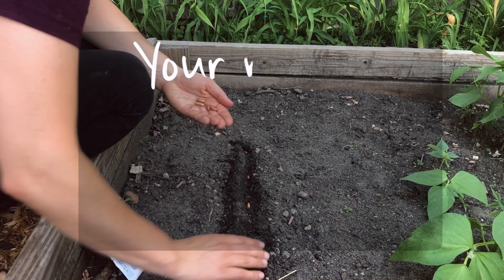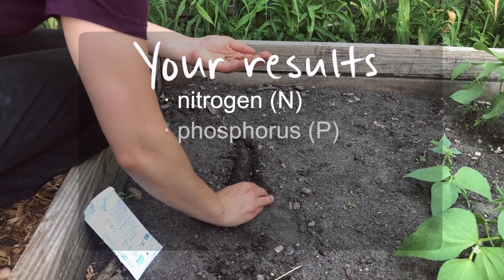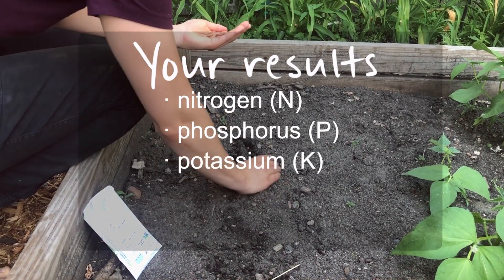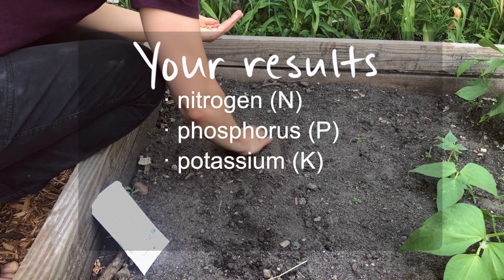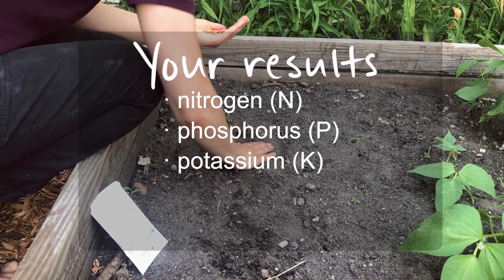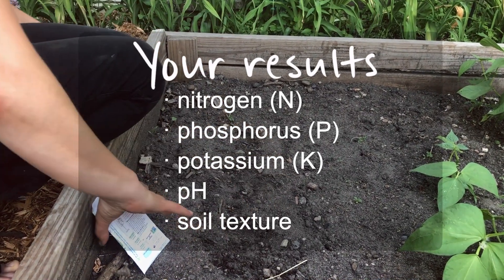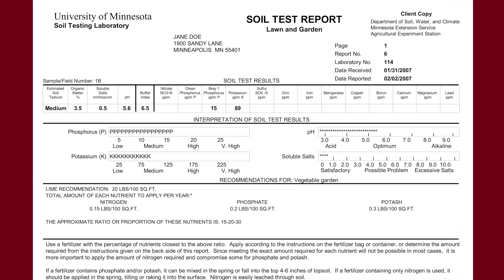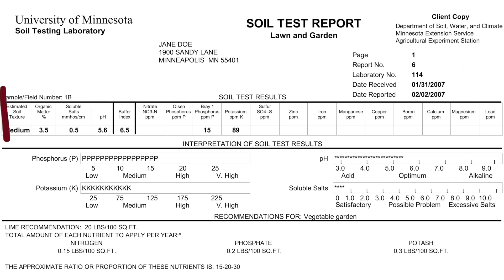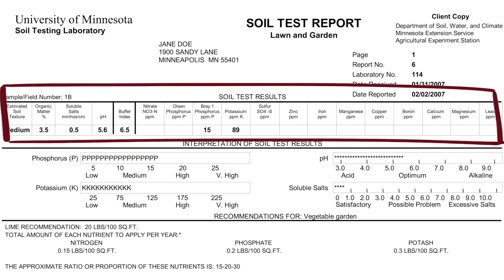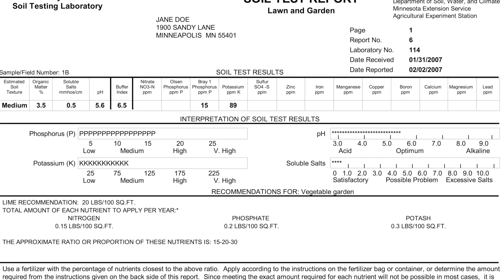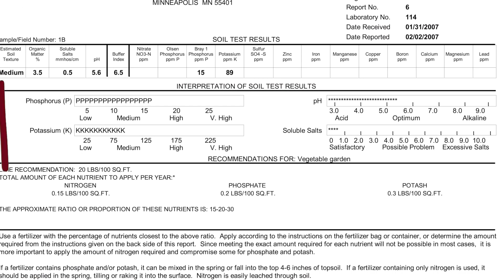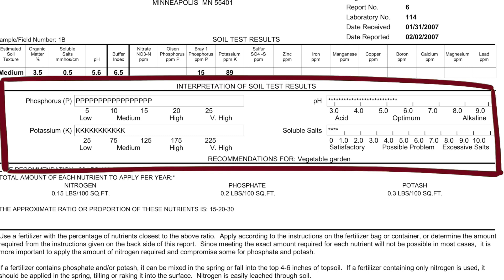The lab's regular test measures nitrogen, phosphorus, and potassium, which your plants use the most of. It also measures your soil's pH levels and its estimated texture. As you can see, the top section lists your soil's results numerically and gives you some scientific terms. The interpretation section in the middle puts those numbers into context using visual guides.